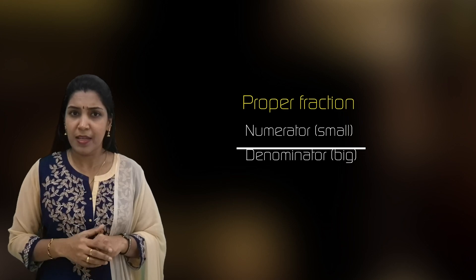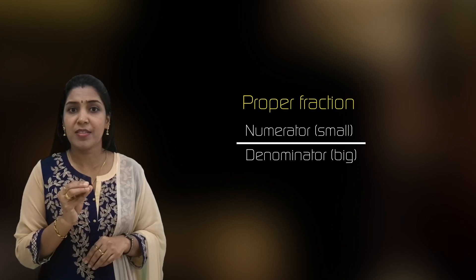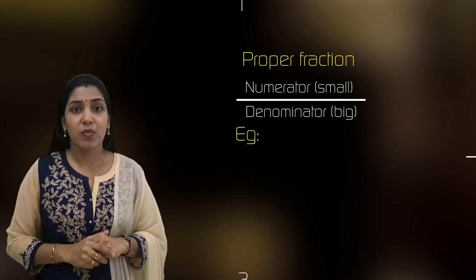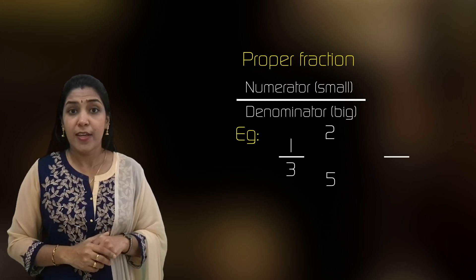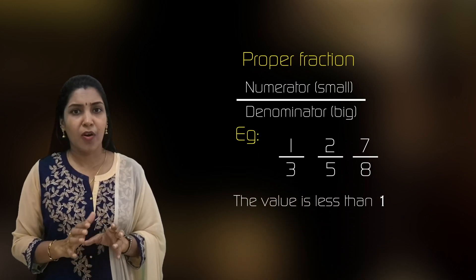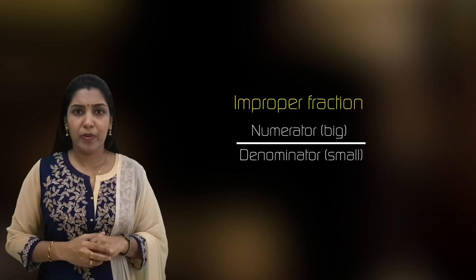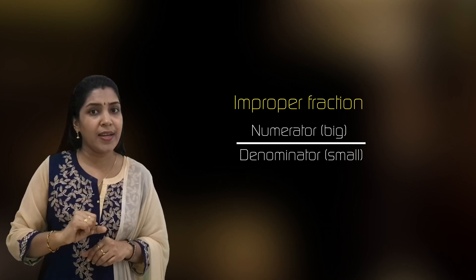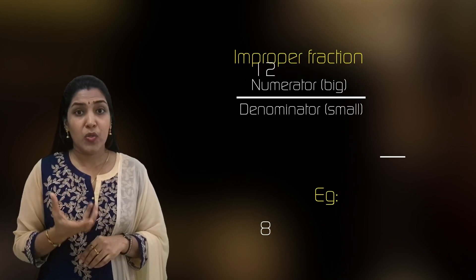Next is types of fractions. The first is proper fraction. In a proper fraction, the numerator is smaller than the denominator — for example, 1/3, 2/5, 7/8. These are all proper fractions. Next is improper fraction. In an improper fraction, the numerator is bigger than the denominator.